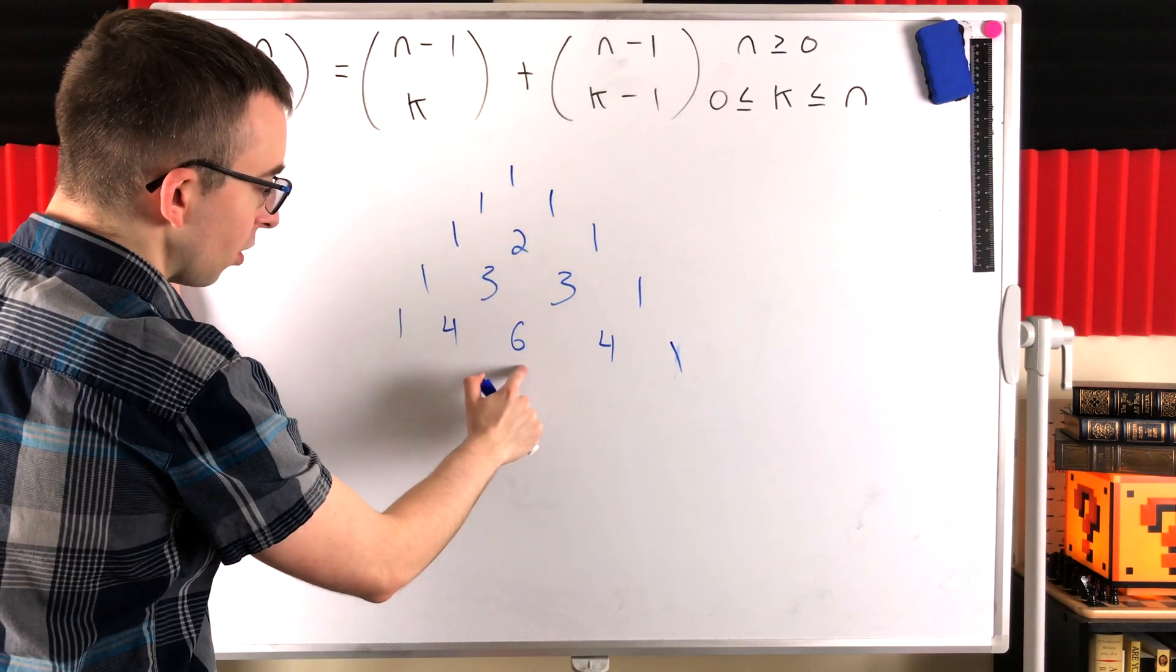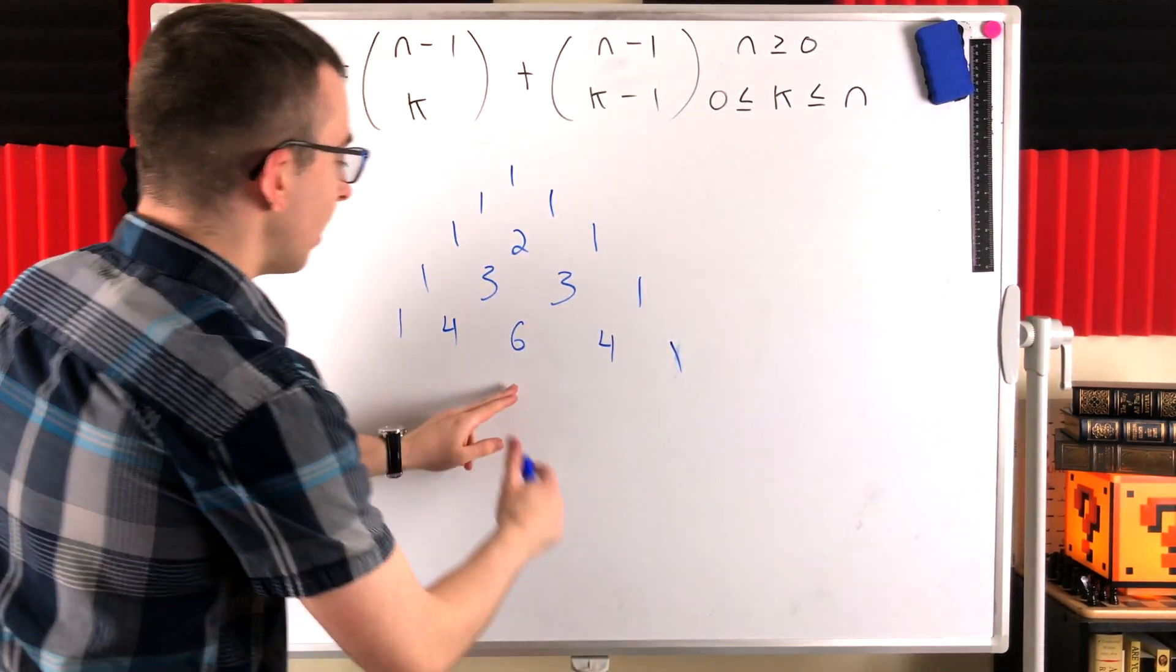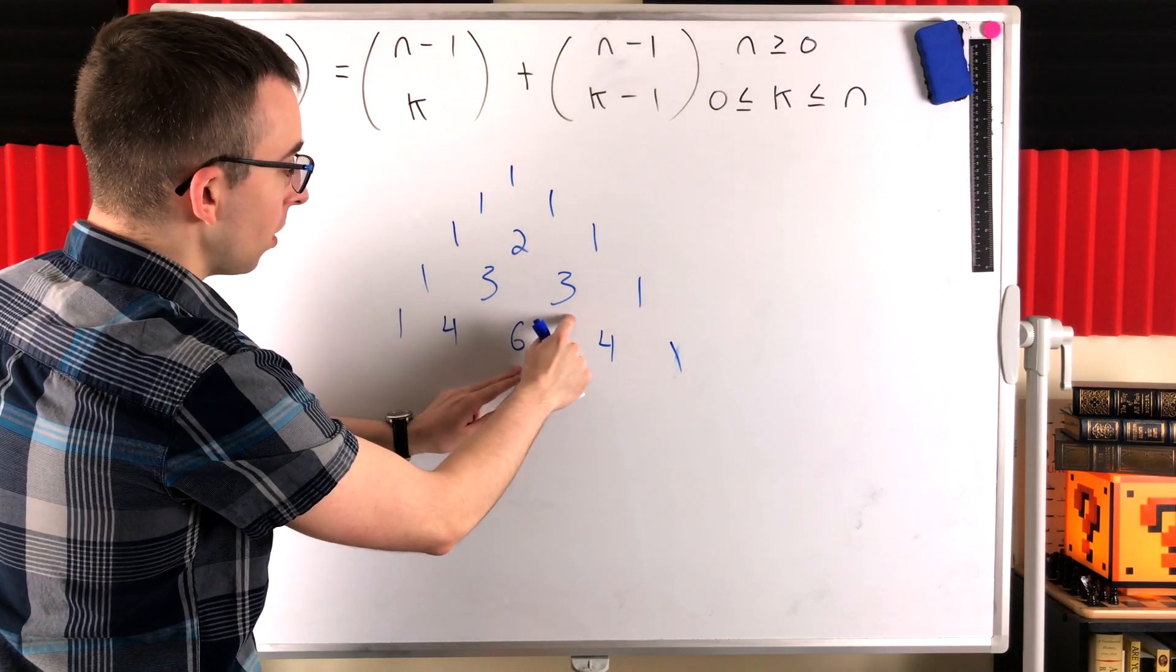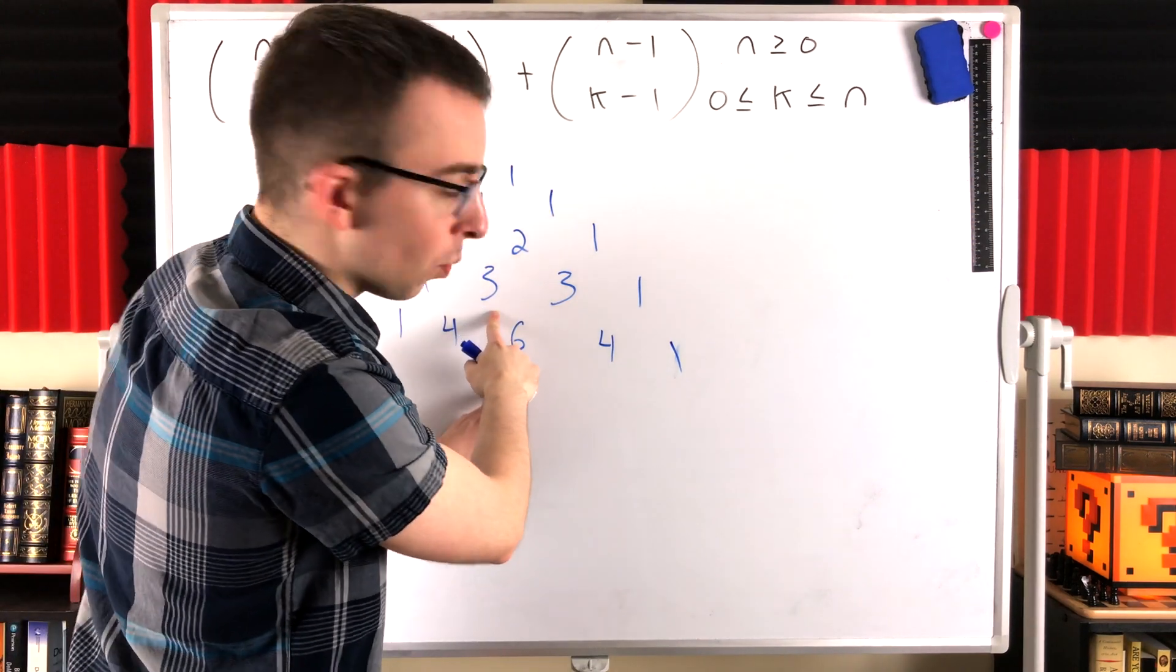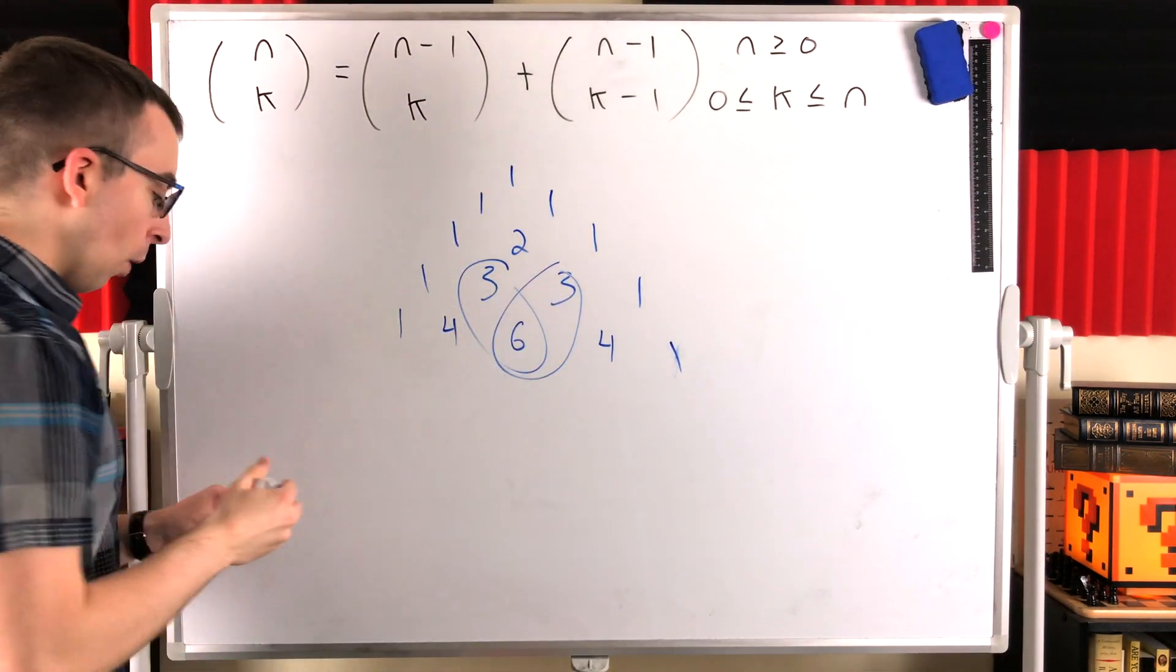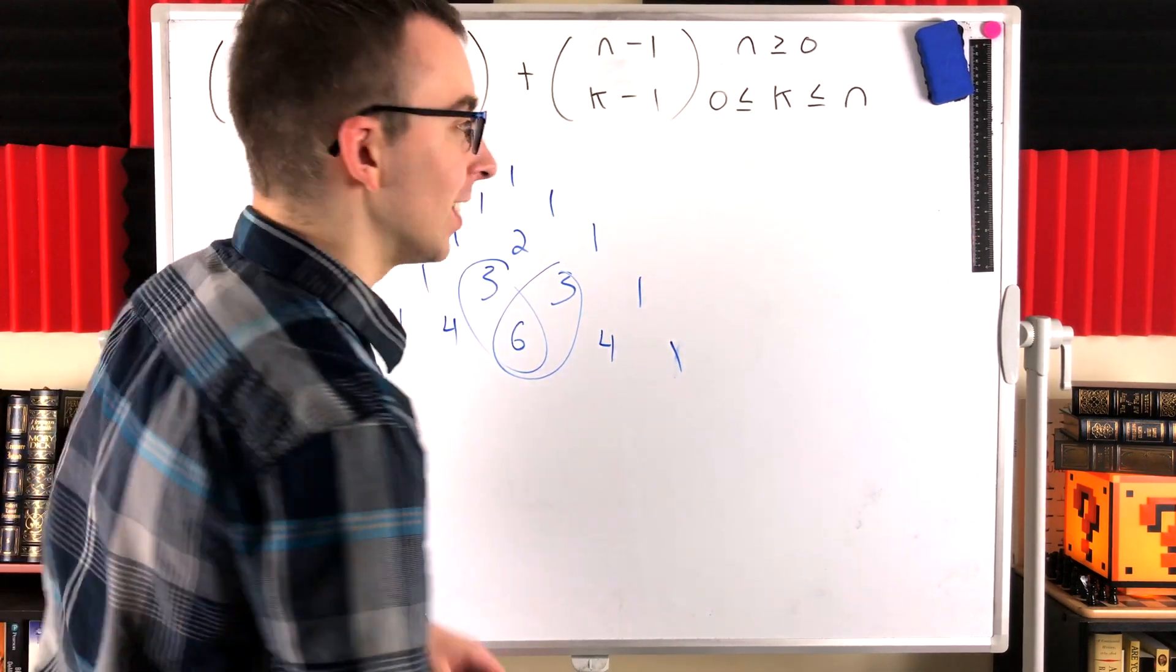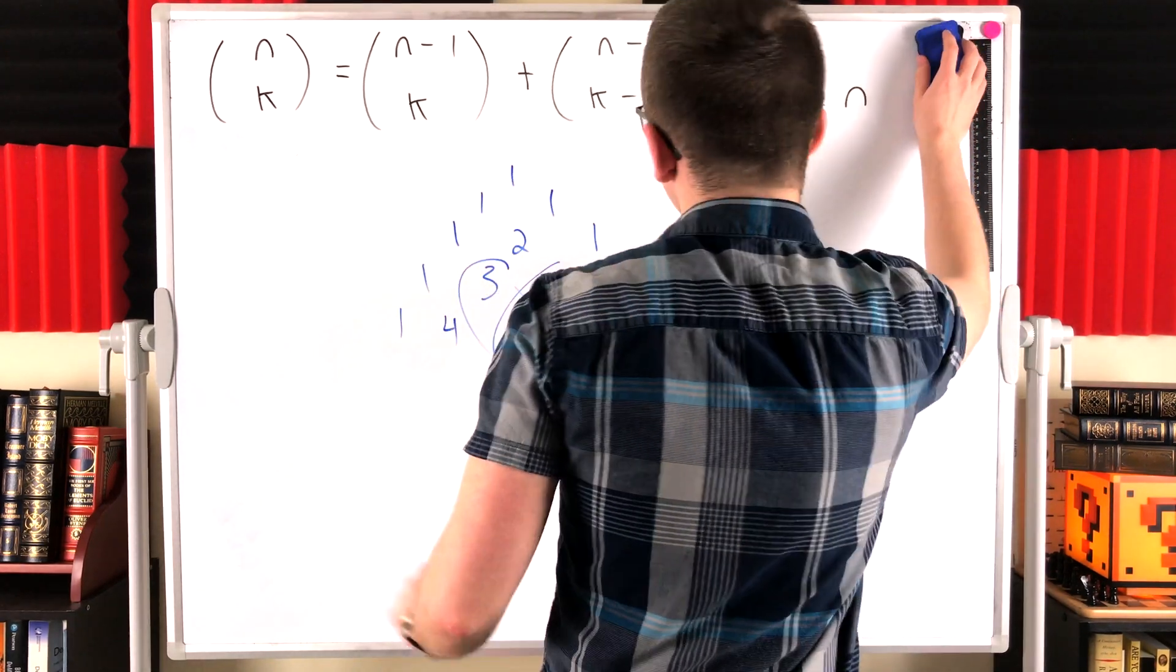4 choose 2 is 6. And we found it by adding 3 choose 2 plus 3 choose 2 minus 1, which is 3 choose 1. So that's how we calculate the binomial coefficients when we're writing out Pascal's triangle like this. We use this identity, whether we know it or not. So pretty cool.